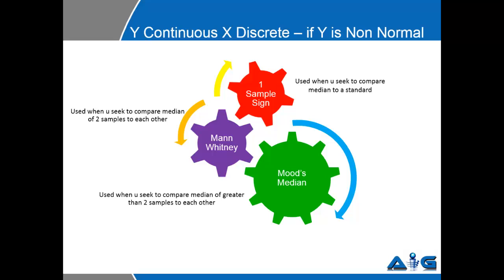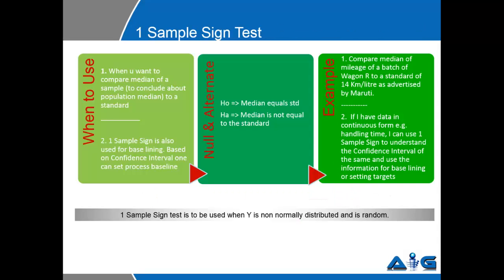Now let us see and understand all three tests with the help of a few examples. One Sample Sign test, as discussed, can be used to compare the median of a sample to a standard. One Sample Sign is also used for baselining — that is, based on the confidence interval that is published, one can set the process baselines.